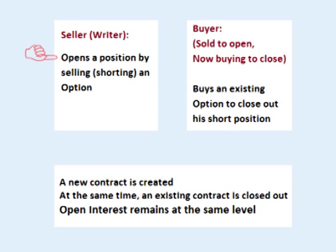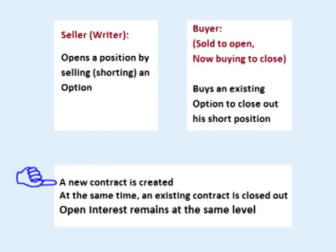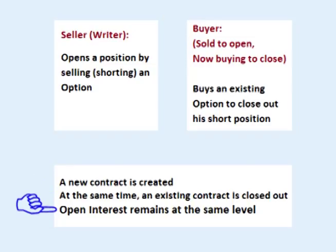Likewise, if a seller sells a contract — in other words, shorts to open — and the buyer of the contract is closing out an existing short position, in other words buying to close, one trader created a new contract while at the same time the other trader closed out an existing contract. So it offsets and Open Interest remains the same.